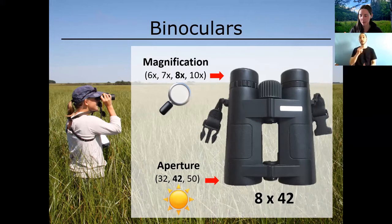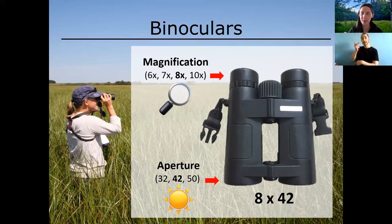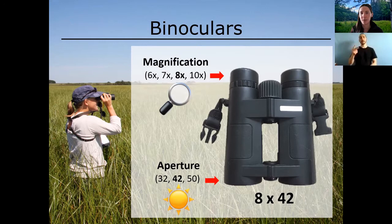One of the important things you'll need for identifying birds is a set of binoculars. You can watch birds with your eyes alone, but it can be frustrating if a bird is too far away to get those key identification clues. Binoculars will really bring the bird up close by magnifying it. When you're looking at different binoculars, they'll have two numbers associated with them — for example, 8x42.